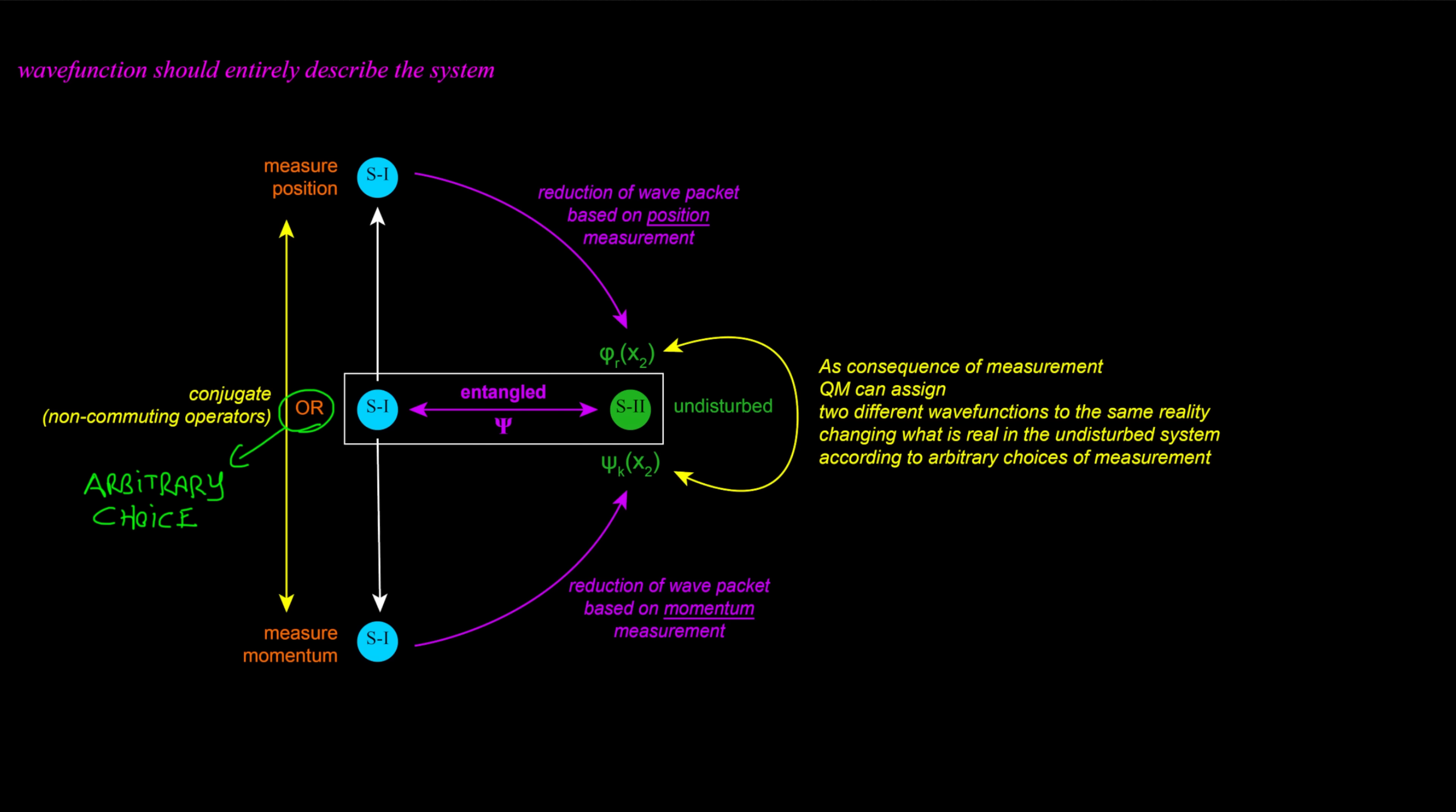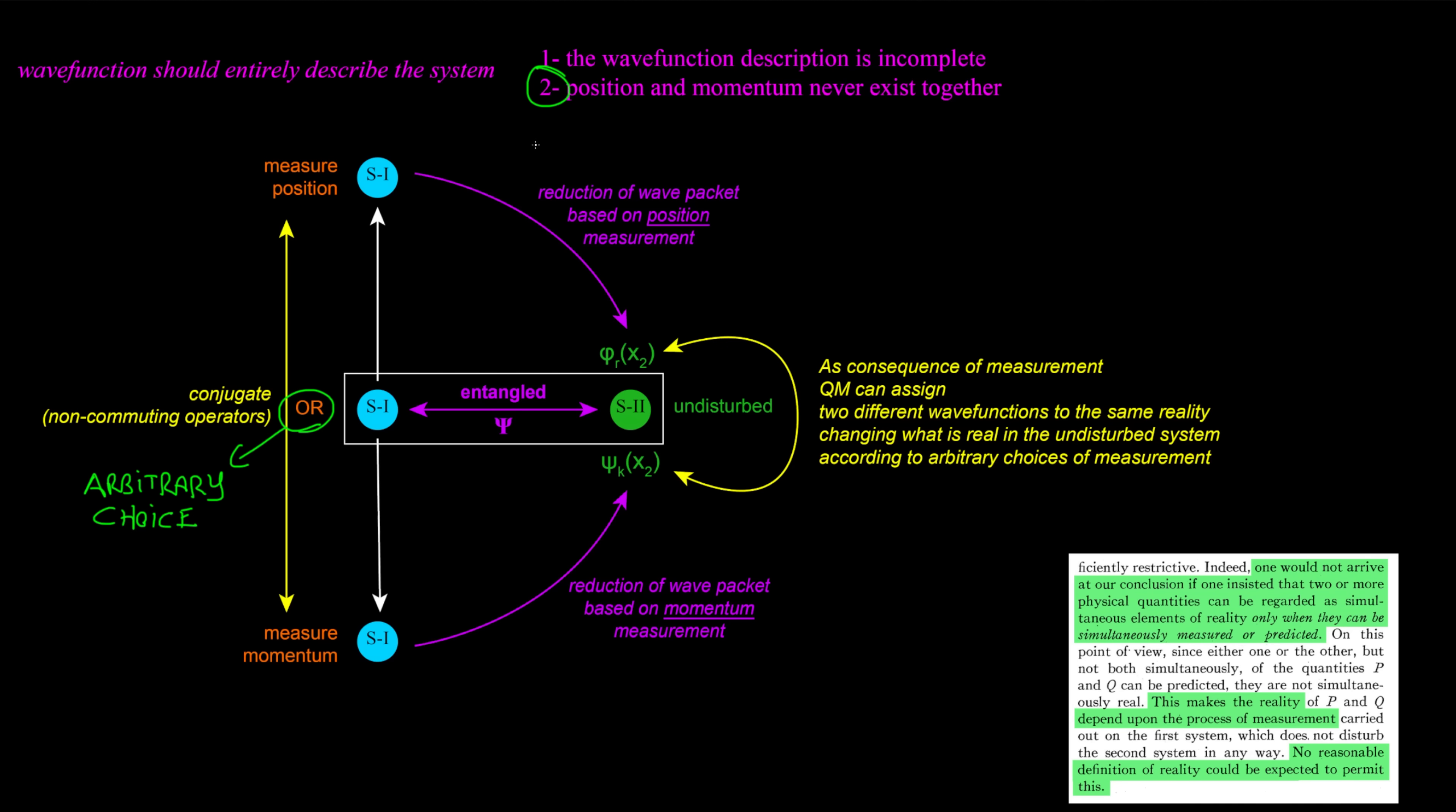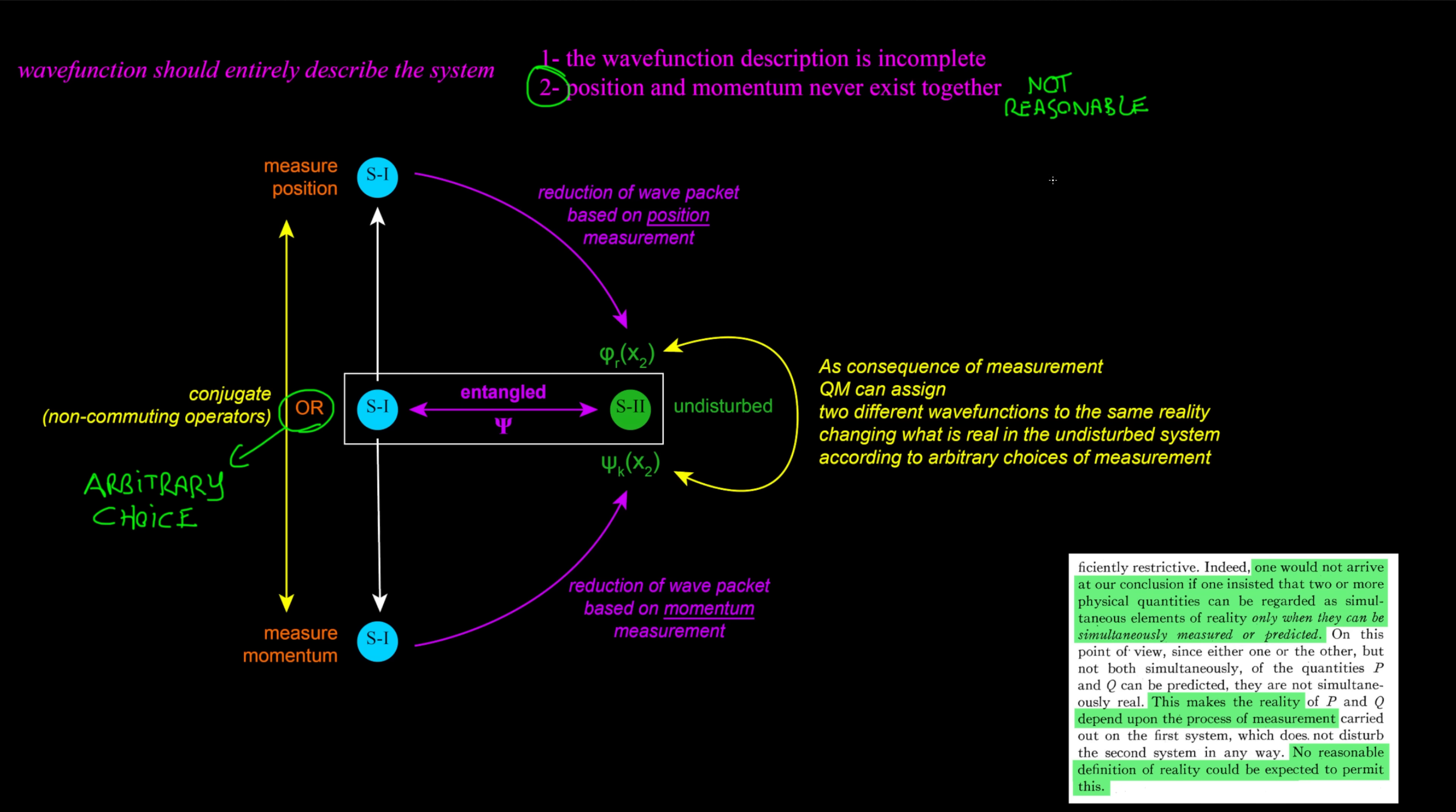As a consequence of measurement, quantum mechanics can assign two different wave functions to the same reality, changing what is real in the undisturbed system according to arbitrary choices. Here EPR leaves two options: the wave function description is incomplete, or position and momentum can't stick together. Since option 2 is not a reasonable description of reality, and here we have two wave functions describing the same undisturbed system, they conclude that the wave function is incomplete.